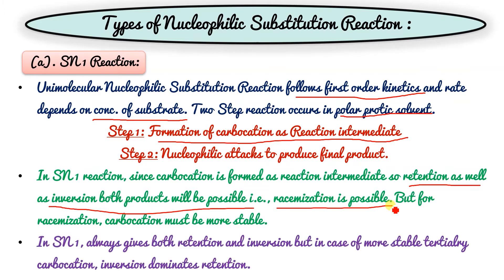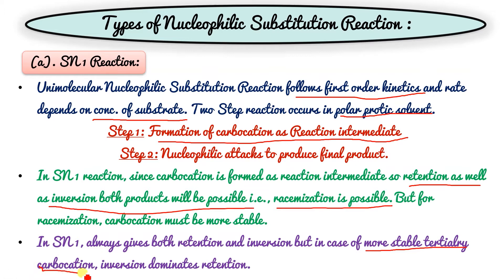In SN1, the reaction always gives both retention and inversion. However, in case of a more stable tertiary carbocation, inversion dominates over retention. This is the important point: for a more stable tertiary carbocation, inversion dominates — meaning inversion will occur more than retention.